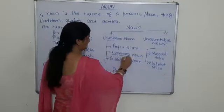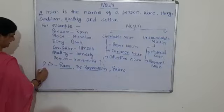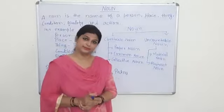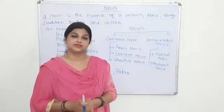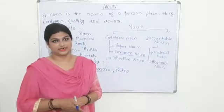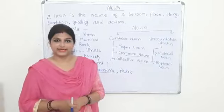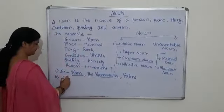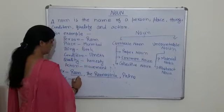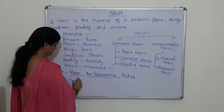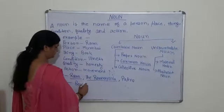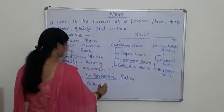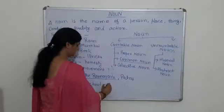Second one is common noun. A noun which denotes a common place, person, or thing is called a common noun. For example: common person — boy; common place — school; and common thing — book.